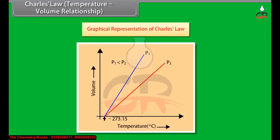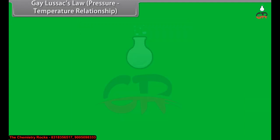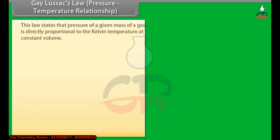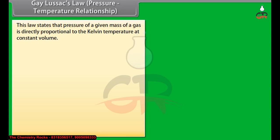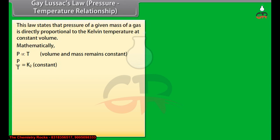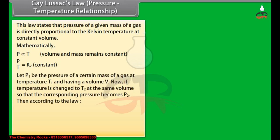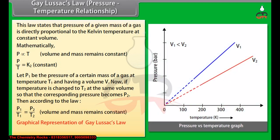The graphical representation of Charles' law shows that each line of the volume versus temperature graph is called an isobar. Gay-Lussac's Law (Pressure-Temperature Relationship): This law states that the pressure of a given mass of a gas is directly proportional to the Kelvin temperature at constant volume. Mathematically, P/T = K₂. Let P₁ be the pressure at temperature T₁ and volume V. If temperature is changed to T₂ at the same volume, the corresponding pressure becomes P₂, and P₁/T₁ = P₂/T₂. The graphical representation of Gay-Lussac's law shows that each line of this graph is called an isochore.